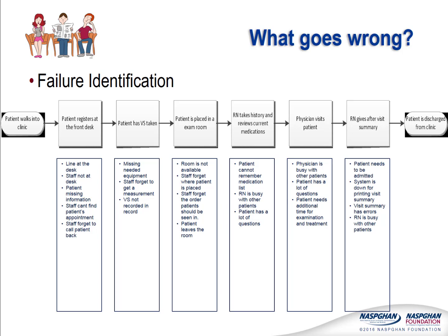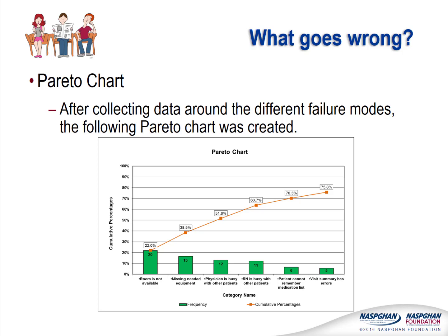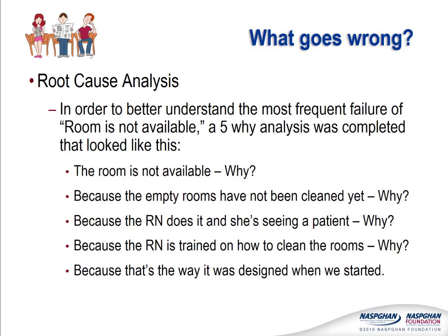In our clinic example, failure modes have been added beneath each step in the process as identified by the team. Please take time now to pause the presentation and review the failures that were collected. After collecting frequency data on the failures, we can put them into the Pareto chart for easy visualization of problem areas. You can see the failure categories on the x-axis, the count of each failure type within the green bars, and the cumulative percentage of total failures represented as a red line over the bars. The most frequent failure was then used to conduct a simple 5-Why root cause analysis, with the resulting conclusion being that the original process design of the nurse being solely responsible for cleaning rooms is contributing to the issue of rooms being unavailable.